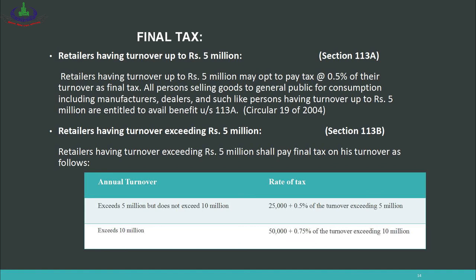All persons who sell goods to the general public for consumption — including manufacturers, dealers, and retailers — can avail this concession. For retailers whose turnover exceeds rupees 5 million annually, the following structure applies: if annual turnover exceeds rupees 5 million but does not exceed rupees 10 million, the tax is rupees 25,000 plus 0.5% of the turnover exceeding rupees 5 million.